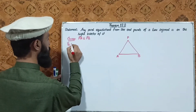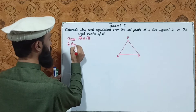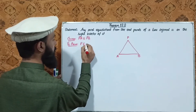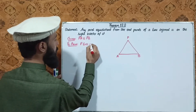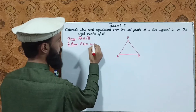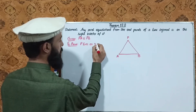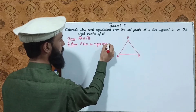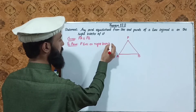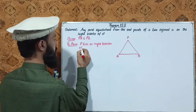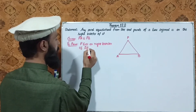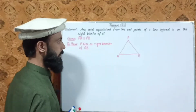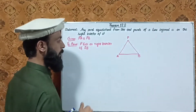We need to prove that P lies on the right bisector of AB — that is, P lies on the perpendicular bisector of AB.